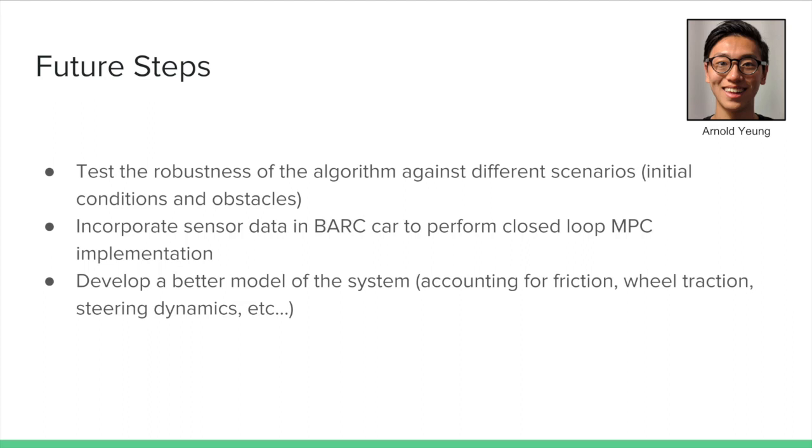So after the successful implementation of an open-loop trajectory to the Bark car, there are a few future steps that we have identified for the project. Our group hopes to be able to test the robustness of the algorithm through different initial conditions and obstacles. We also hope to be able to implement a closed-loop MPC control on the Bark car by incorporating sensor data from the Bark. A better model of the vehicle can also be developed that takes into account other variables such as friction, wheel traction, and steering dynamics. So this basically concludes our project. Thank you for listening.